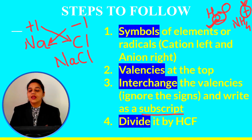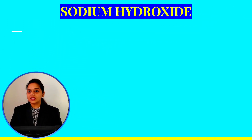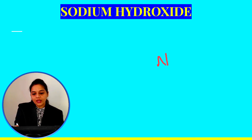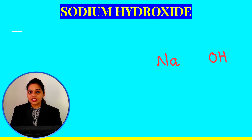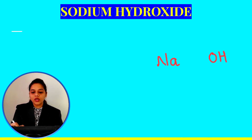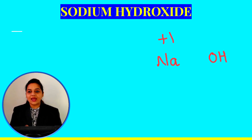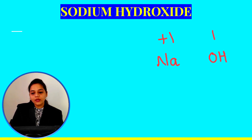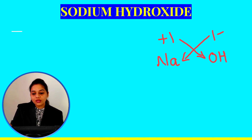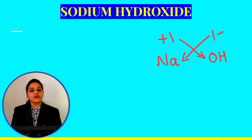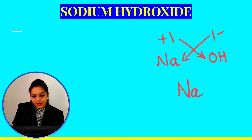Now let's see how to make chemical formulas. The first example is sodium hydroxide. Write sodium on the left-hand side and hydroxide ion OH on the right-hand side. Second step: write the valencies on top — sodium has +1 valency and hydroxide ion has -1 valency. Third step: interchange the valencies, ignore the sign, and ignore if the valency is 1.